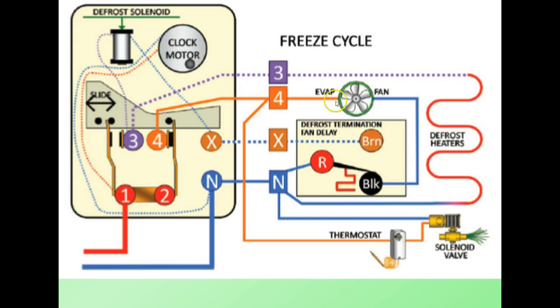This same 115 volts comes out terminal 4. It also goes to the thermostat. Since we're in the freeze cycle, we know the thermostat contacts are made. That power passes through the thermostat to the solenoid valve. The solenoid valve is opened, the compressor is on, and we have our neutral coming back.